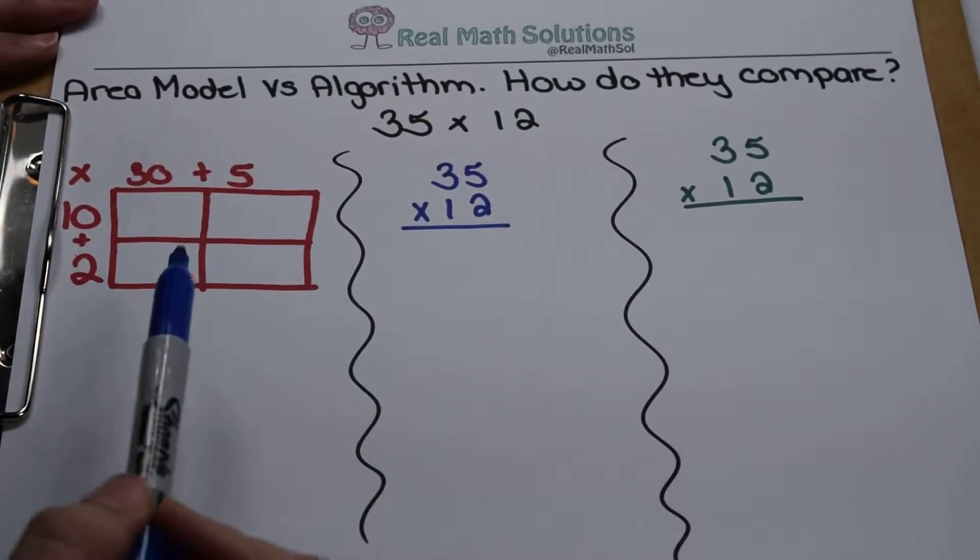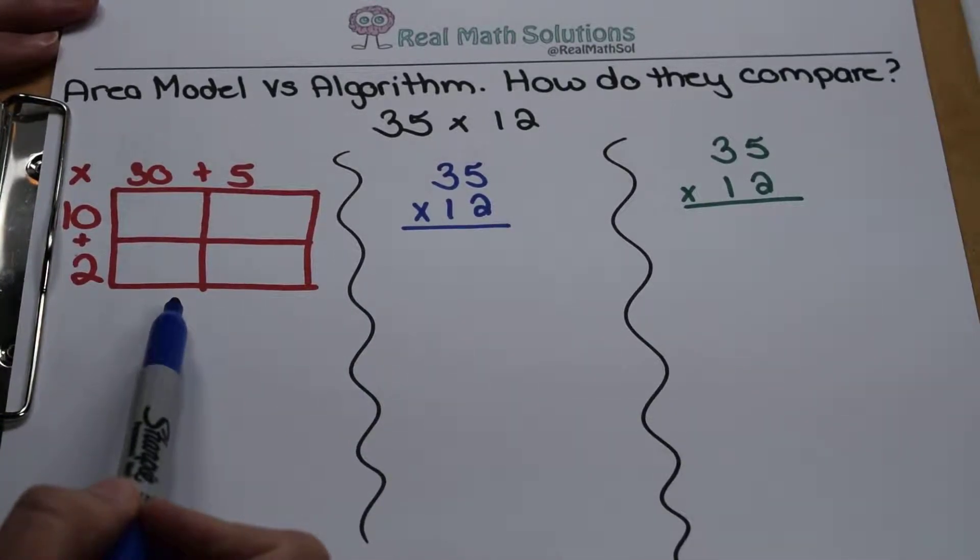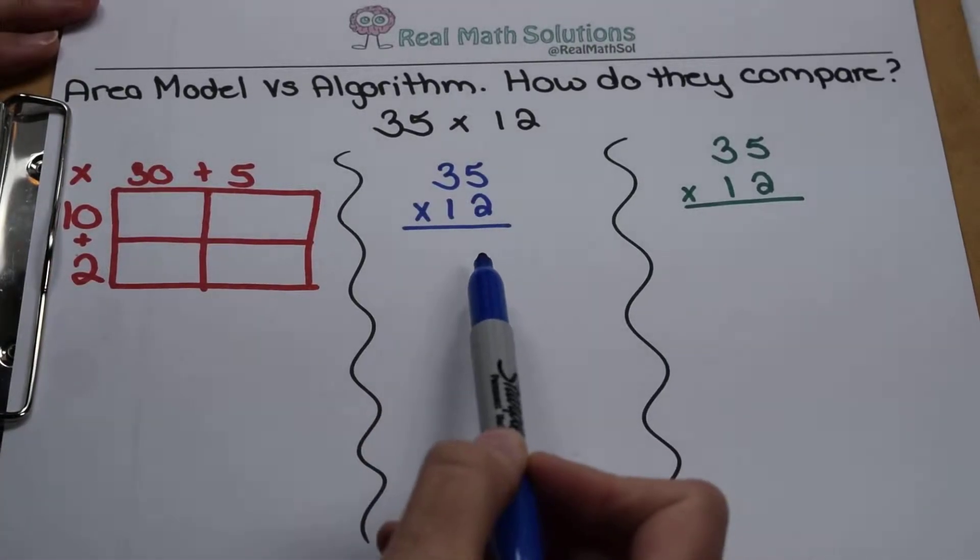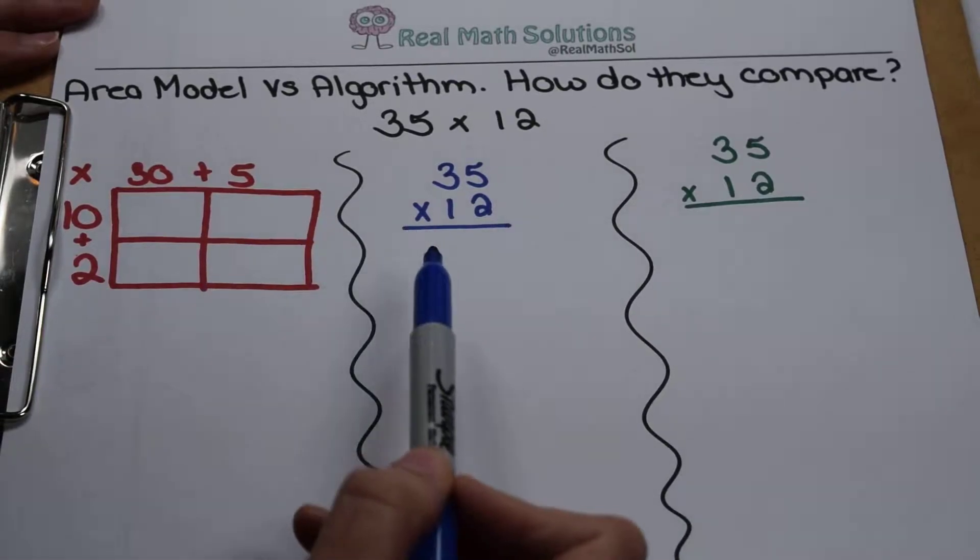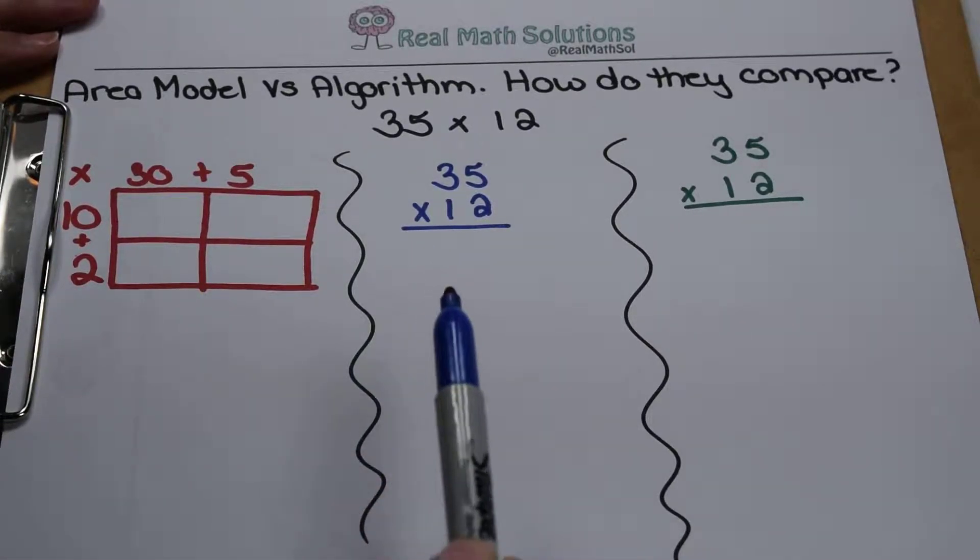There's a video floating around of a teacher demonstrating how to multiply a problem using an area model that somebody has compared to the traditional algorithm. The point seems to be the traditional algorithm is much more efficient than the area model. Let's look at them both today and see how they really compare and if they're really doing the same thing.